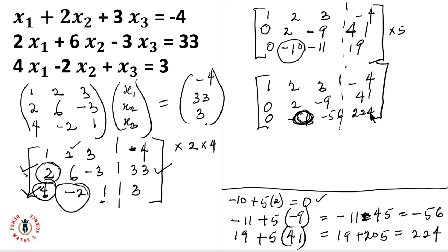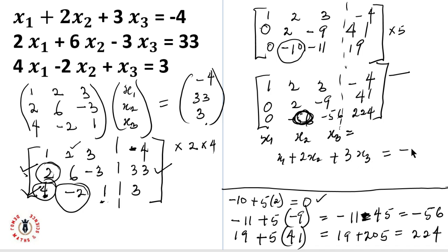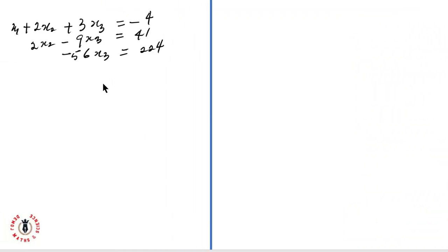Now we can look at our augmented matrix and bring back x1, x2, and x3. This is my column for x1, here is x2, here is x3, and these are my results. From the first row: x1 plus 2x2 plus 3x3 equals minus 4. From the second row: 2x2 minus 9x3 equals 41. From the last row: minus 56x3 equals 224. Now let's solve these equations — we can tag them equation 1, equation 2, and equation 3.